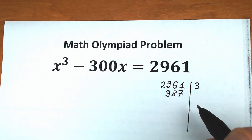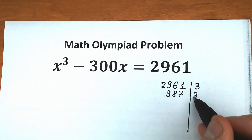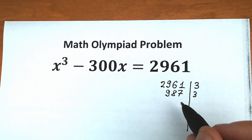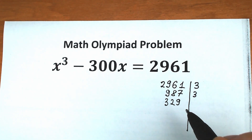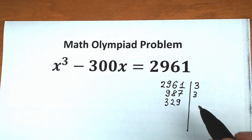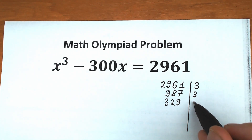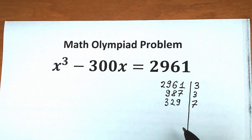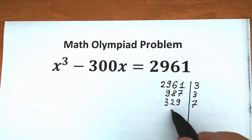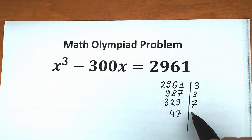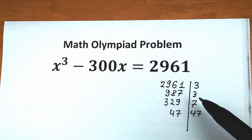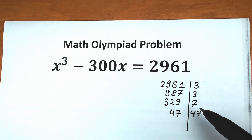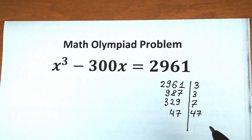Once more, let's divide this constant by 3. We have 329. And we can divide this 329 by 7. As a result, we have 47. We can also divide this 47 by 47. So this constant equals the product 3 times 3 times 7 times 47.